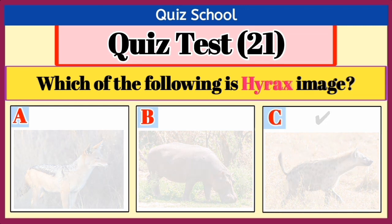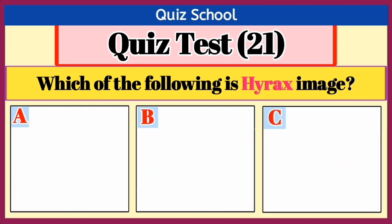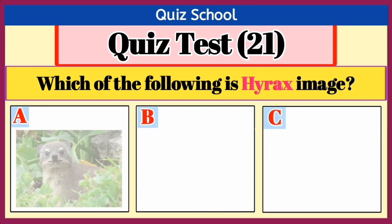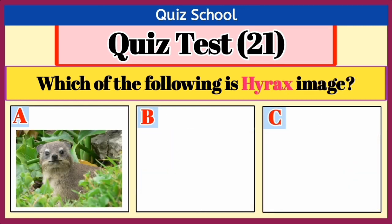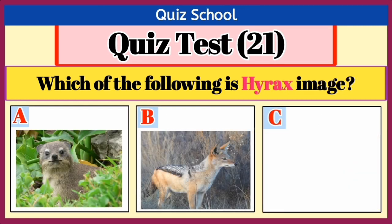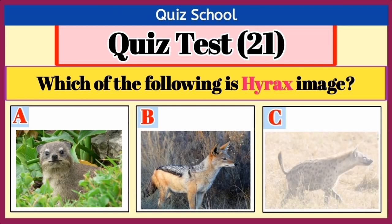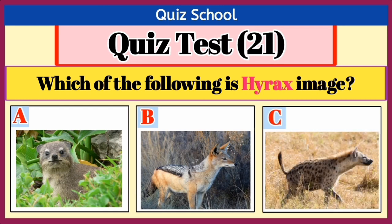Question number 9. Which of the following is the horax image? Option A, Option B, or Option C. Right answer is Option C.